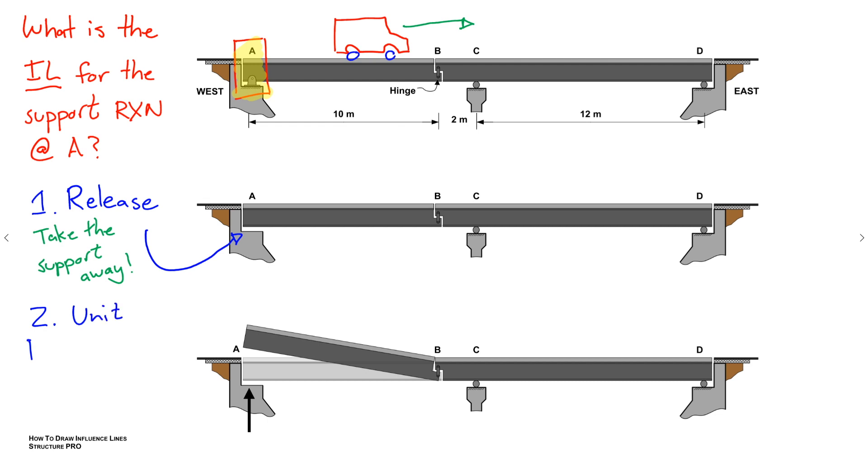Now, step number two, we're going to produce this unit deformation. So in this case, we're going to push up at the support until there's a displacement equal to one. And then all that's left to do is trace out the deformed shape. So we're doing that in red here. We can label all our points. We're one at A, we're zero at B, C, and D. Done. That's our influence line. Amazing.